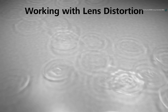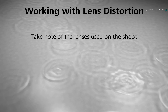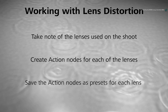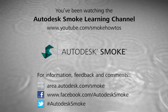Here are some suggestions to help make this work for you. Ensure someone takes note of the lenses used on set, as it will make life a lot easier in VFX when performing these corrections. Remember to create an Action node for each lens that is corrected. And finally, save them as presets in the custom user bin. You can then drag out the lens corrections when needed to match the camera lenses used on the shoot. Thank you for watching, and please subscribe to the Smoke Learning channel for future videos.